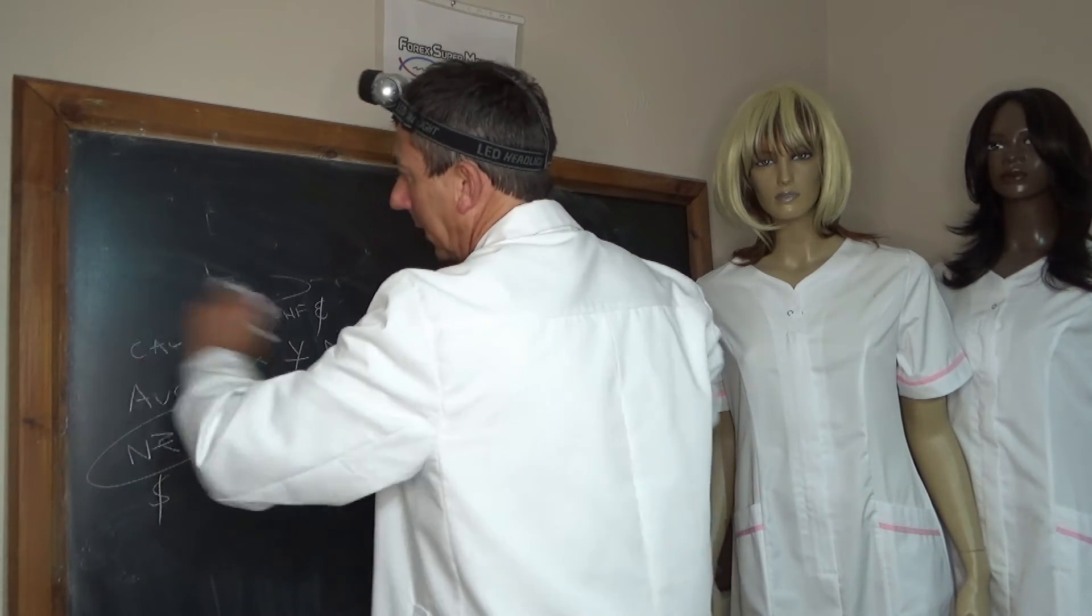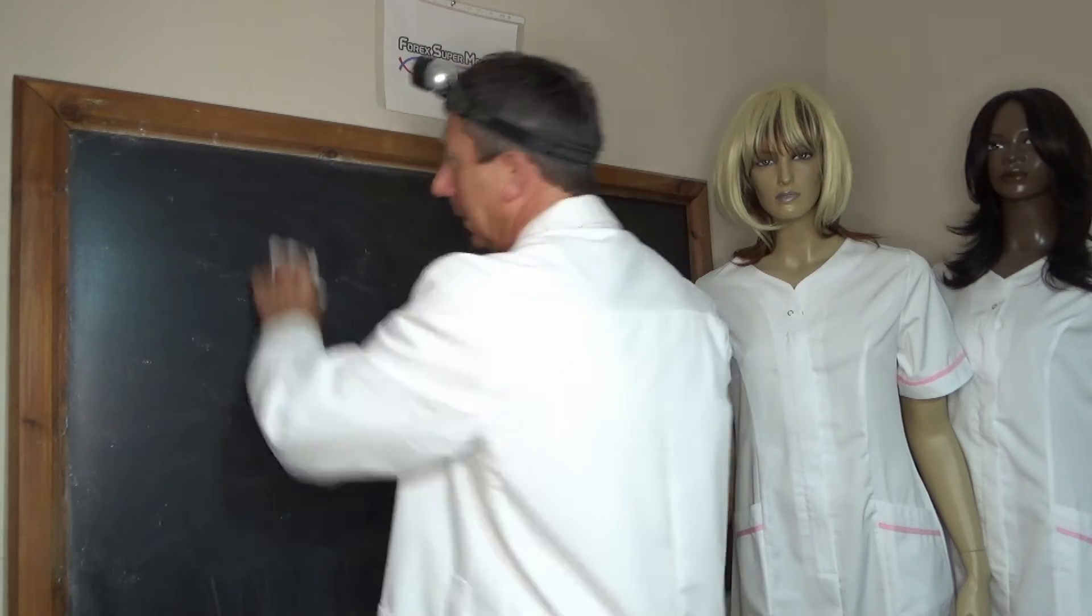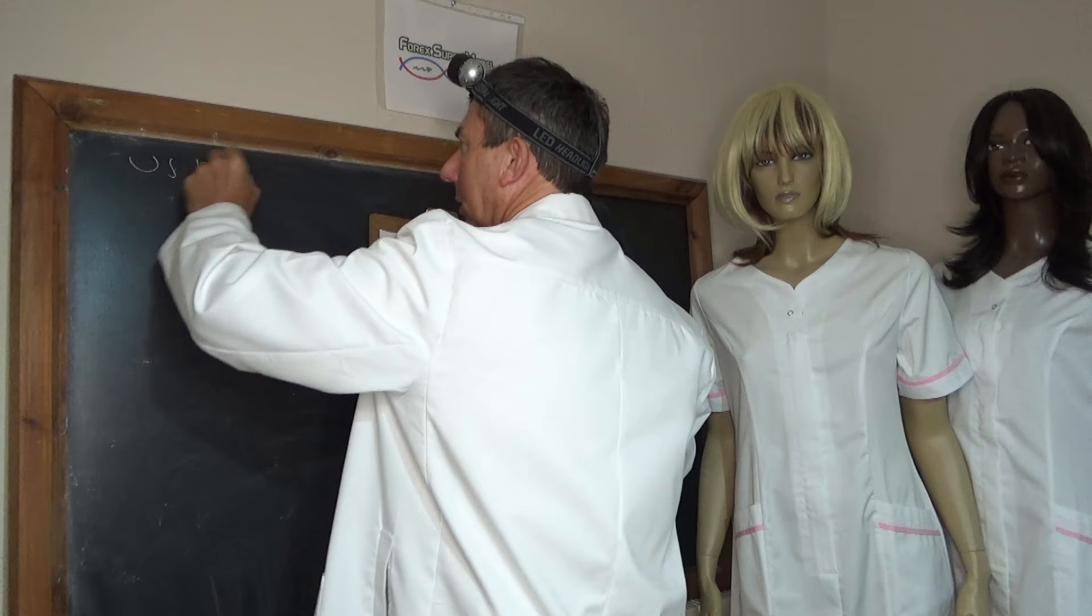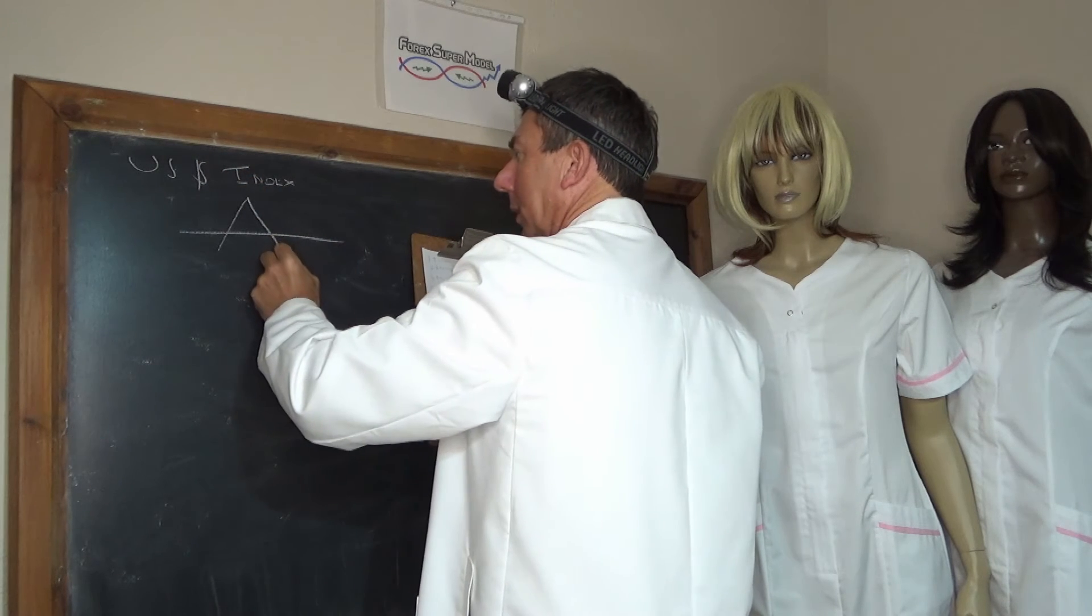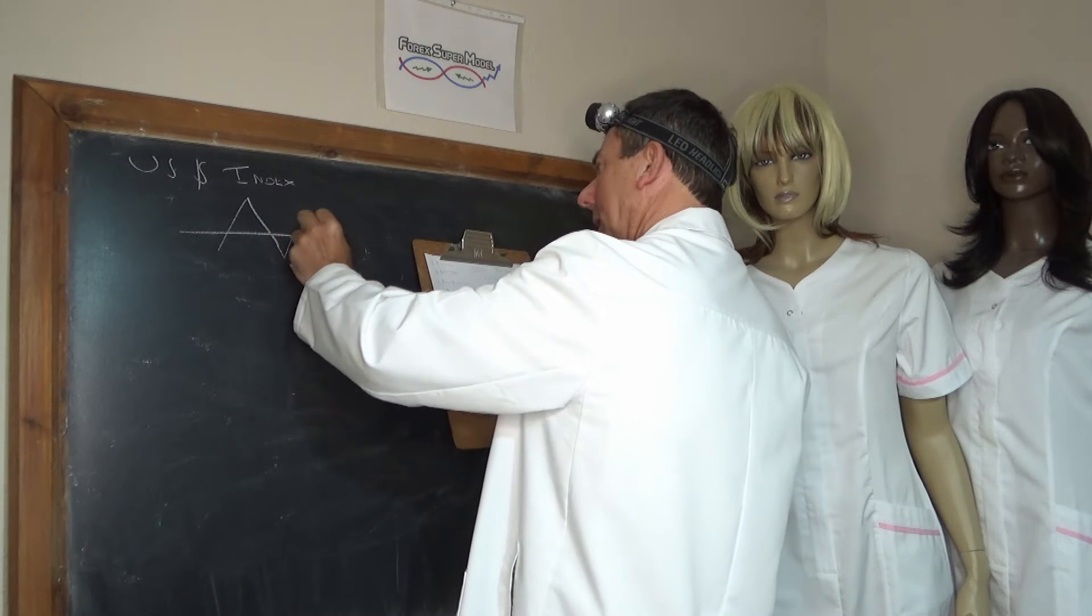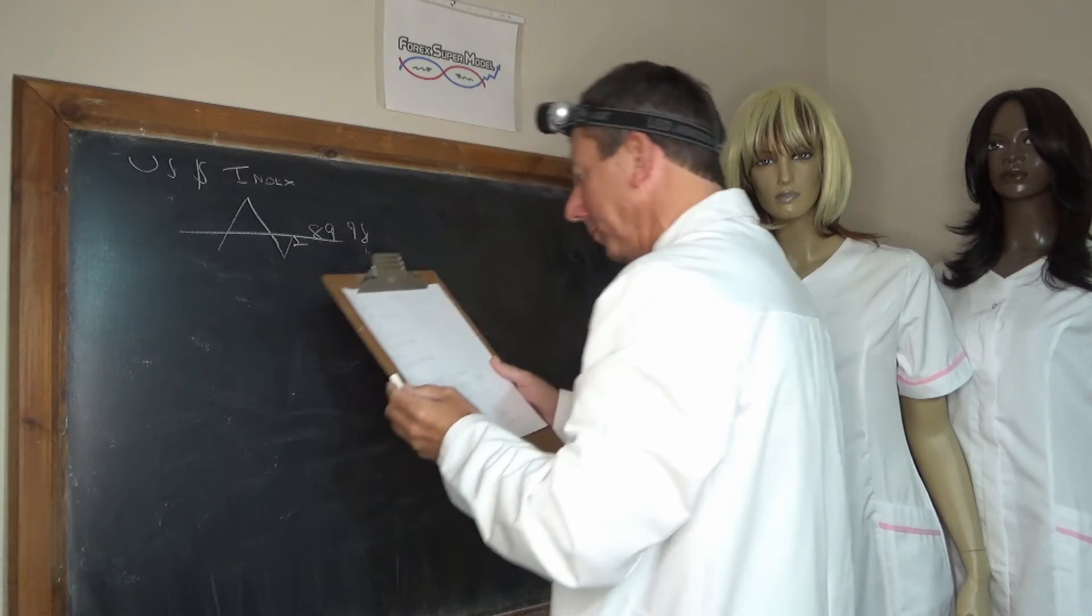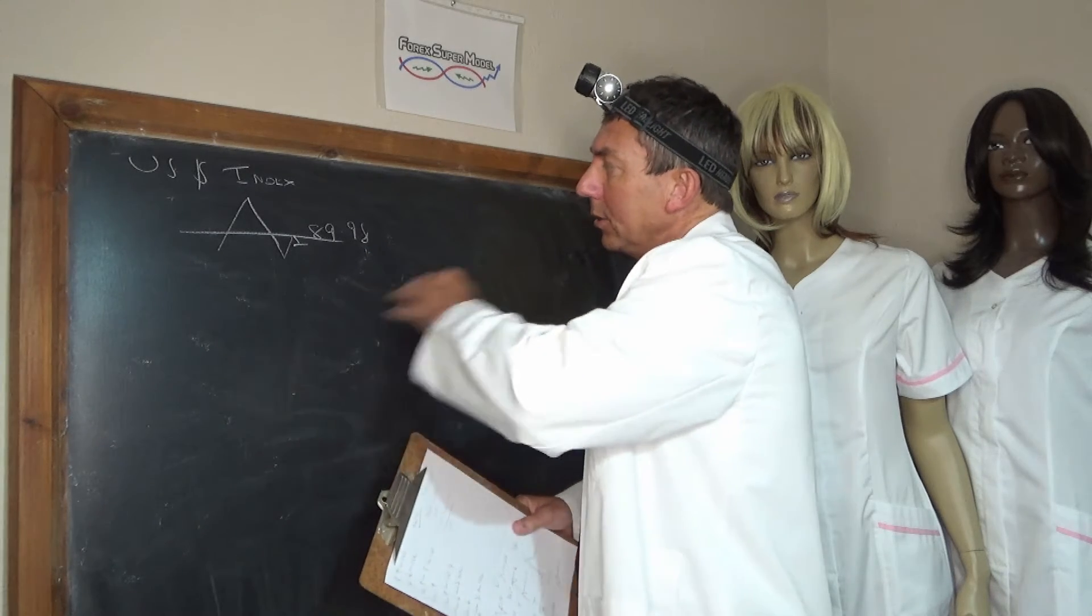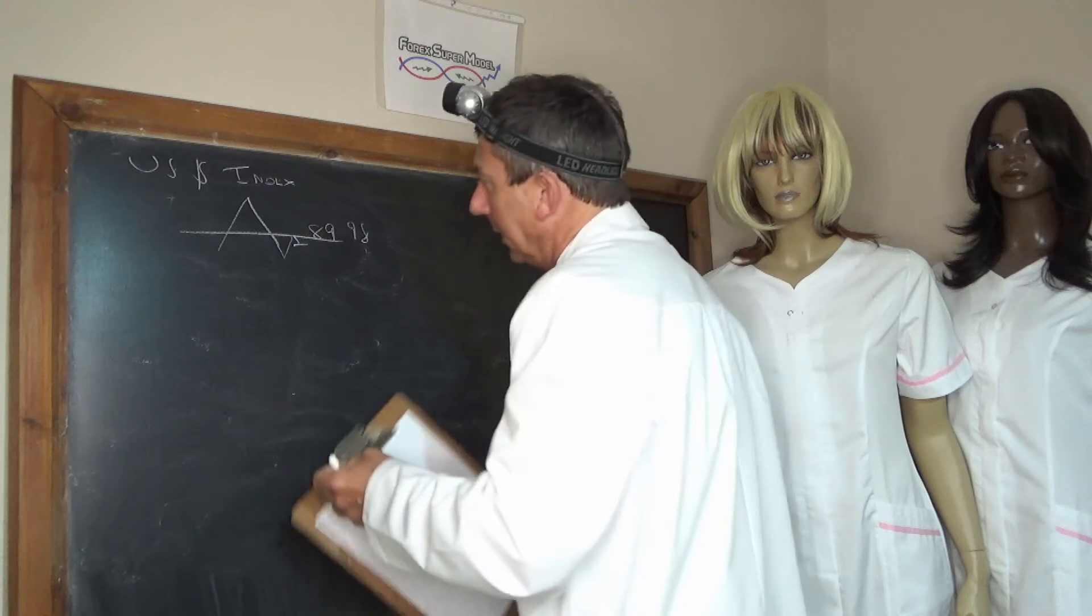We normally start with the US dollar index. So let's make a start with that then. We've got this double bottom. It's come back, it's come off a little bit there. So it's 89.98, basically 90. This is the price remember. So the dollar is relatively weak.